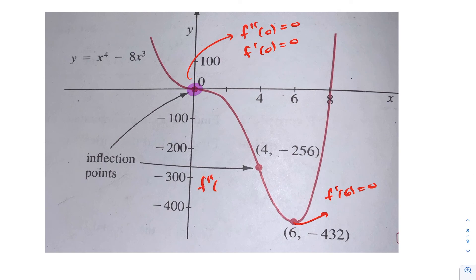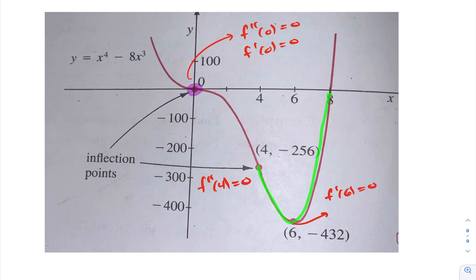There is another inflection point where f double prime at 4 equals 0. This is where the function goes from a situation where the tangent lines are above the curve, and then once we pass x equals 4, the tangent equations are below the curve. Because of that, f double prime at this value is greater than 0, so we have concave upwards from 4 to infinity. We had concave downwards from 0 to 4, and from negative infinity to 0 the function was concave upwards.